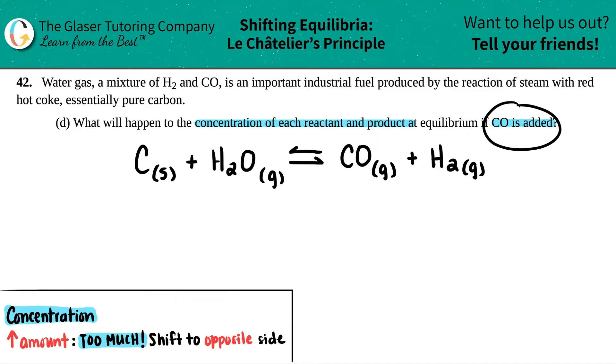Okay, so we're changing the system by increasing the amount of CO, and we just have to find out what's going to happen with the equilibrium. I'm going to find where CO is and make sure that it's a gas or aqueous, because that's when we go by the rules of Le Chatelier's principle. It's a gas, so I'm just going to say that we're increasing this.